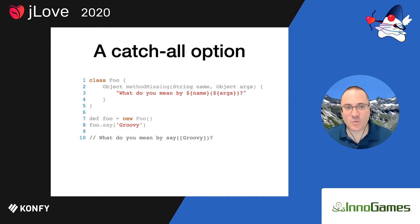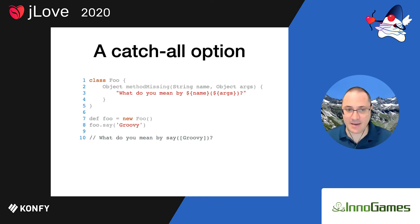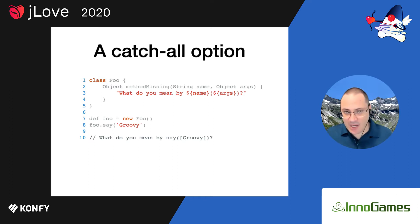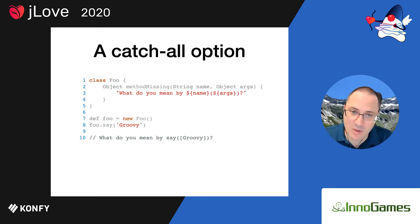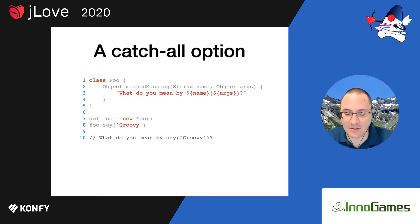In the case of Groovy, this is called method missing. If you use that particular signature on a Groovy or Java class, you can catch anything that the type does not understand. We have a class Foo that has no properties and no methods other than methodMissing. When we create an instance of Foo and invoke a method like 'say' with the argument 'Groovy', we get that particular printout — that's how we can tell our methodMissing implementation was handled.